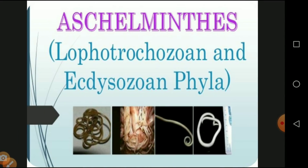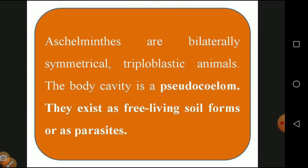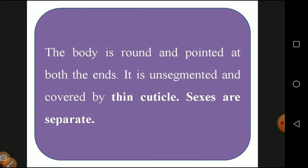The next phylum is Aschelminthes, also in the form of roundworms. They are bilaterally symmetrical, giving two identical halves. They are triploblastic — with ectoderm, endoderm, and mesoderm. The body cavity is a pseudocoelom, meaning a false body cavity — there is no true body cavity. They exist in free-living soil forms as well as as parasites. The body is round and pointed at both ends — cylindrical with sharp pointed ends.